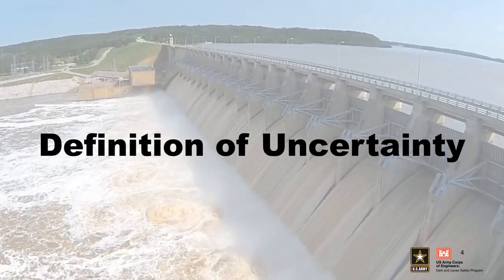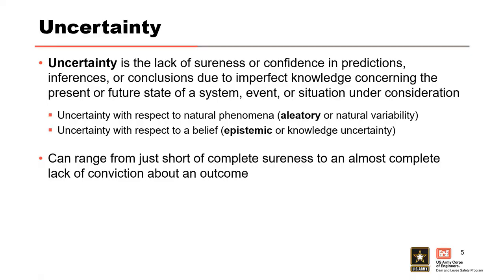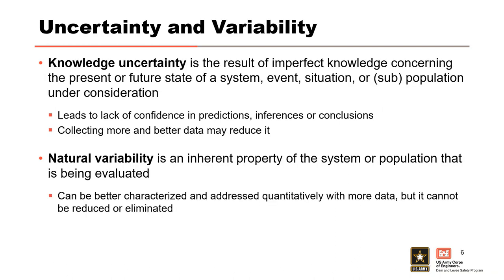Uncertainty is a lack of sureness or confidence in predictions, inferences, or conclusions due to imperfect knowledge. When dealing with uncertainty with respect to natural phenomena, that is known as aleatory uncertainty or natural variability. Uncertainty with respect to a belief is known as epistemic or knowledge uncertainty. Knowledge uncertainty is the result of imperfect knowledge — collecting more and better data might reduce it, with examples including model uncertainty and parameter uncertainty.